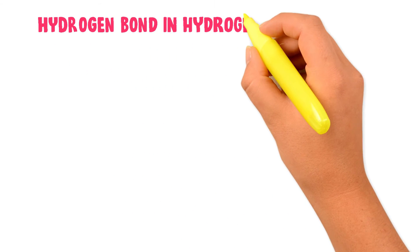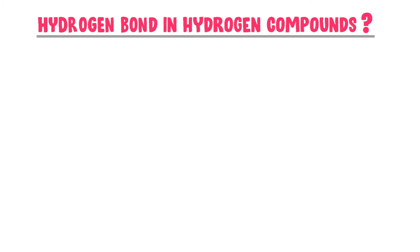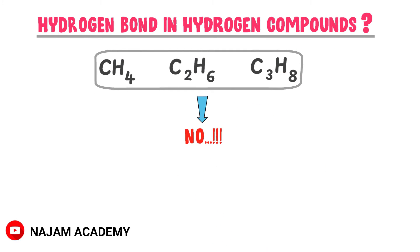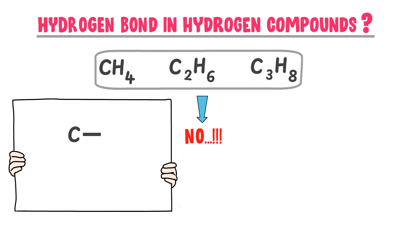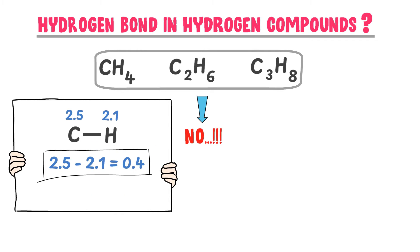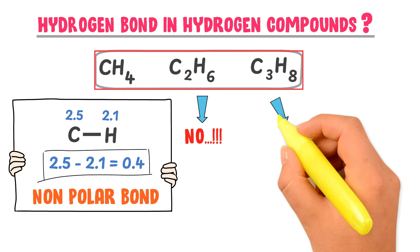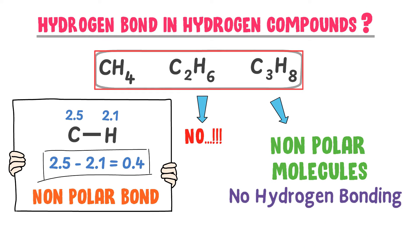Does hydrogen bonding exist in all hydrogen compounds like methane, ethane, and propane? The answer is absolutely no. Hydrogen bonding doesn't exist in these compounds because carbon is less electronegative. The electronegativity of carbon is 2.5 and of hydrogen is 2.1, giving a difference of only 0.4 — a very small difference. The C–H bond is non-polar, so all these molecules are non-polar and hydrogen bonding doesn't exist in them.